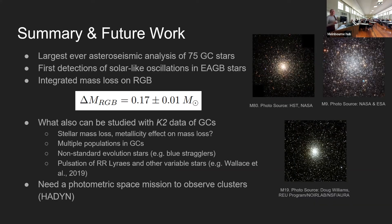In summary: this is the largest ever asteroseismic analysis of globular cluster stars, and we have the first detections of solar-like oscillations in early asymptotic giant branch stars. We derived an accurate integrated mass loss on the red giant branch using the average masses for the red giant branch and red horizontal branch, finding a mass loss of 0.17 plus or minus 0.01 solar masses, consistent with the expected 0.2 solar masses for globular clusters. Other science opportunities with this data include multiple populations in globular clusters, non-standard evolutionary stars, and variable stars. Finally, we really need a space-based photometric mission to observe globular clusters for longer time baselines to improve on studies like this — as advocated by the science collaboration HAYDN. Thank you for listening.